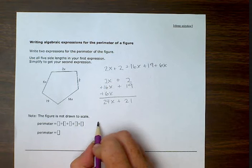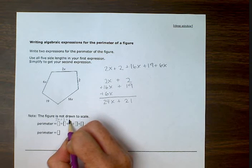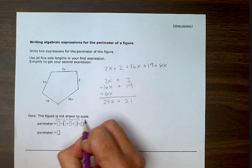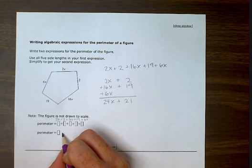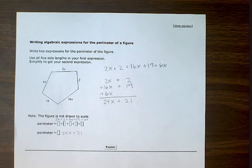So this answer will be 2x plus 2 plus 16x plus 19 plus 6x. And then this answer will be 24x plus 21.